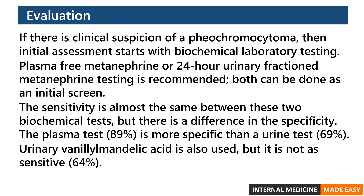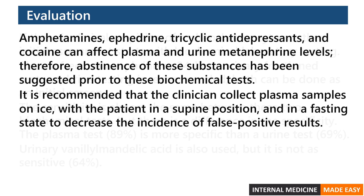If there is clinical suspicion of pheochromocytoma, initial assessment starts with biochemical laboratory testing. Plasma-free metanephrine or 24-hour urinary fractionated metanephrine testing is recommended; both can be done as an initial screen. The sensitivity is almost the same between these two tests, but the plasma test is more specific. Urinary vanillylmandelic acid is also used but is not as sensitive. Amphetamines, ephedrine, tricyclic antidepressants, and cocaine can affect metanephrine levels, so abstinence is suggested prior to testing. Plasma samples should be collected on ice with the patient supine and fasting to decrease false positive results.